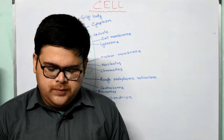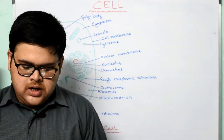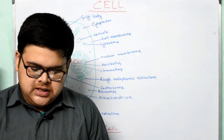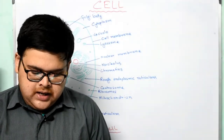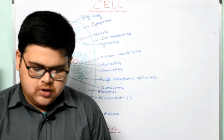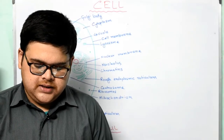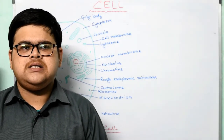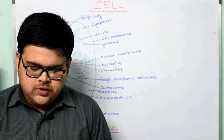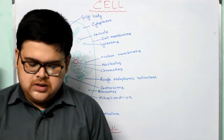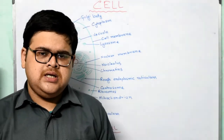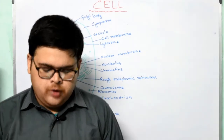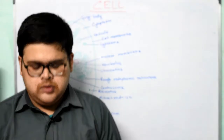The nucleoplasm contains one or more spherical bodies called nucleoli — singular is nucleolus. The nucleoplasm also contains a network of thread-like structures called chromatin. We will study chromatin in detail in class 10. These thin thread-like structures are known as chromatin. That is all about the nucleus.